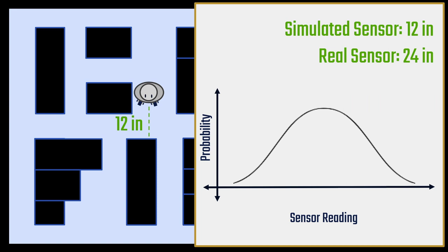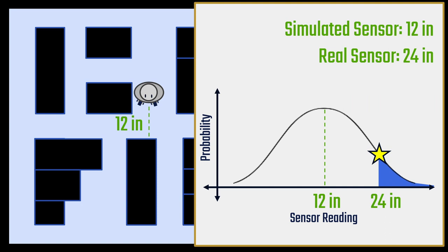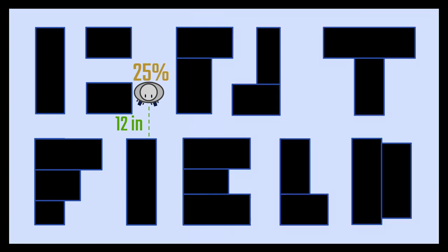Just set the center of the curve at the simulated sensors reading or 12 inches and then depending on the amount of error you stretch the curve out more or less. In this case 24 inches falls about here on the curve and if you calculate the area under the curve you get the probability in this case 25%. If the real robot were at the same location as a simulated robot it would have a 25% chance of getting a reading of 24 inches from the sensor.